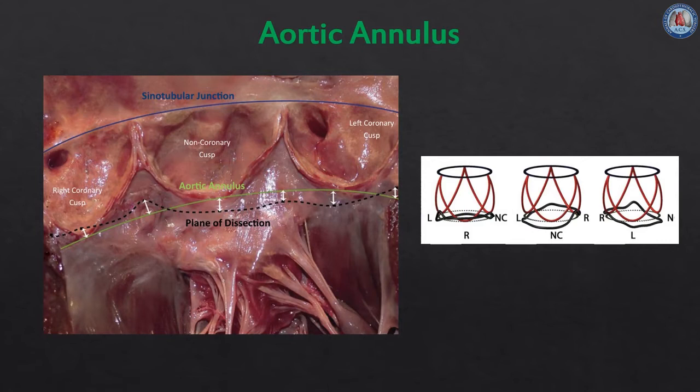The aortic annulus has been described in different ways, with terms such as virtual ring, basal ring, or ventricular aortic junction being used. However, the term annulus is a consensus terminology and defines the inflow of the aortic root as the plane passing through the nadir of the aortic cusps. It can be measured either on echo long-axis view or by direct intubation intraoperatively.